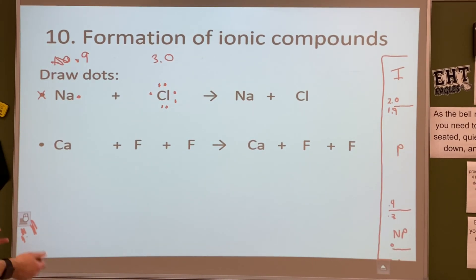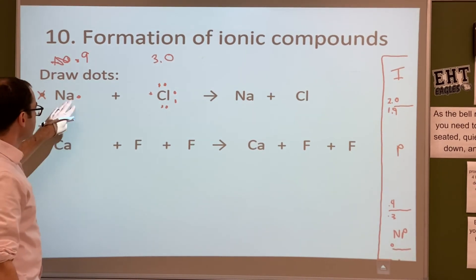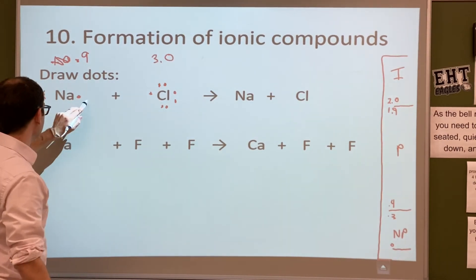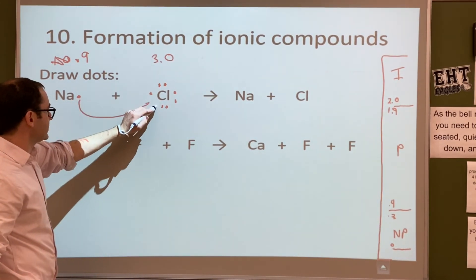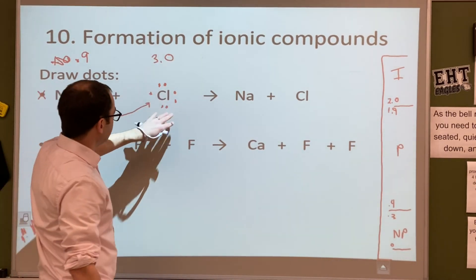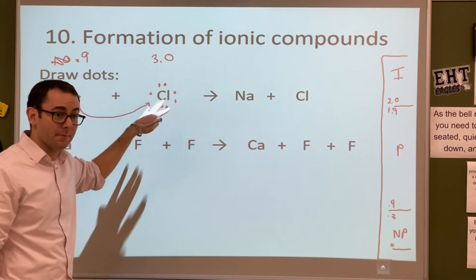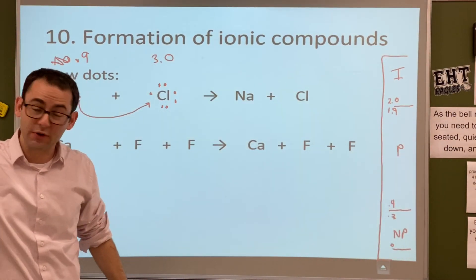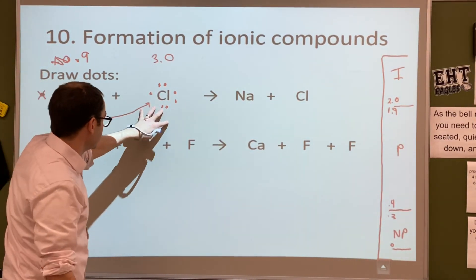Alright, so there's going to be a loss or a gain of electrons. Alright, what's sodium going to do? Lose or gain? Lose. Yeah, it wants to get rid of 1, because then it'll be isoelectronic to neon. If chlorine gains 1, it's going to be isoelectronic to what? Argon. Argon. Yeah, you just look at the next one over, so it'll be isoelectronic to argon.